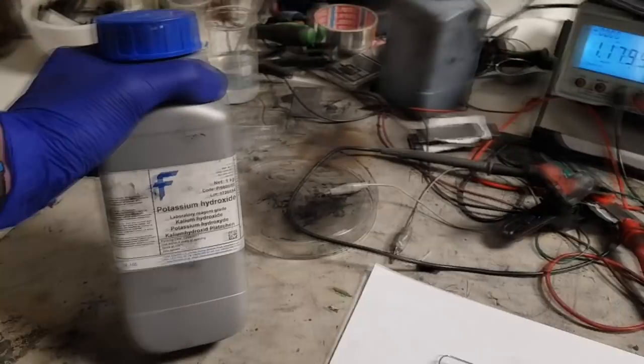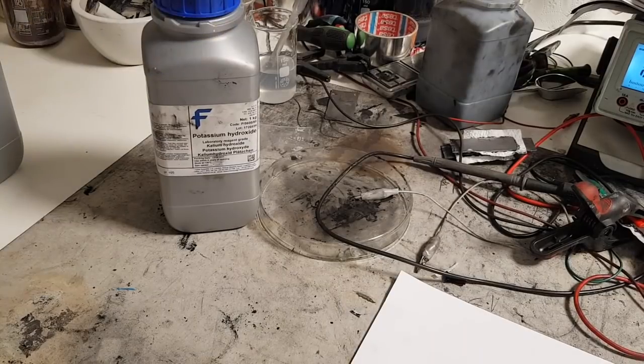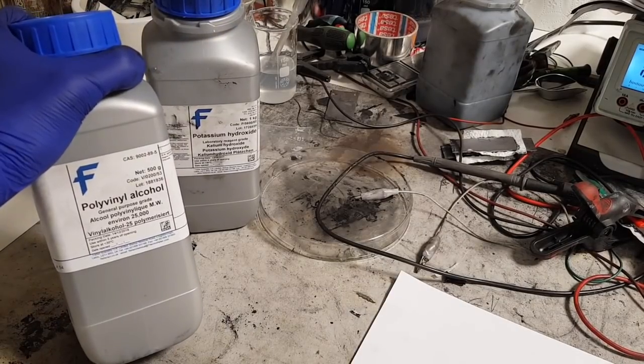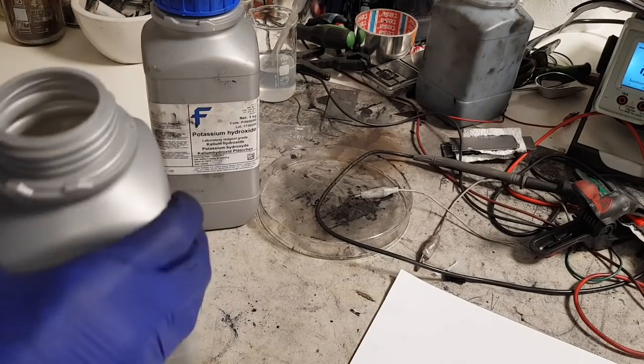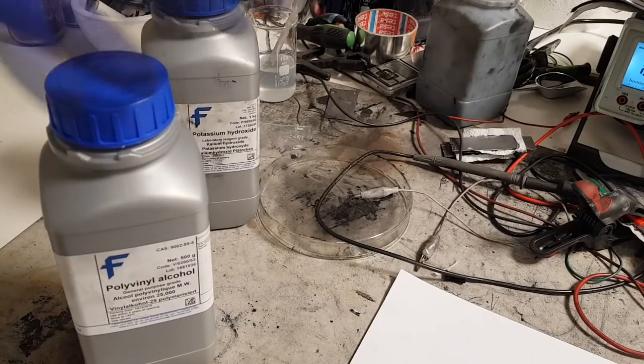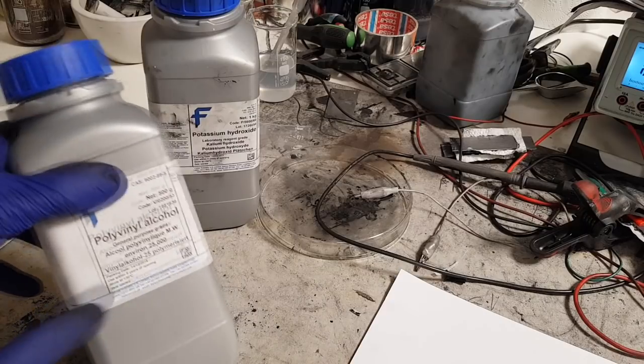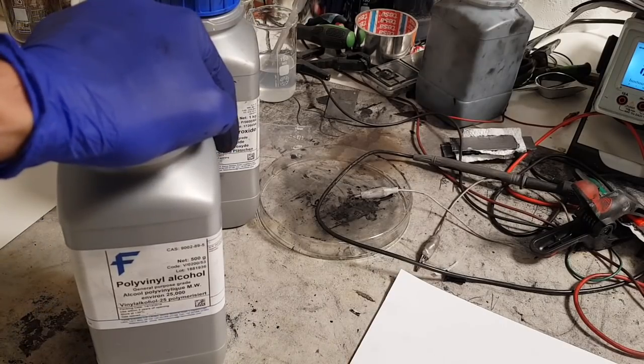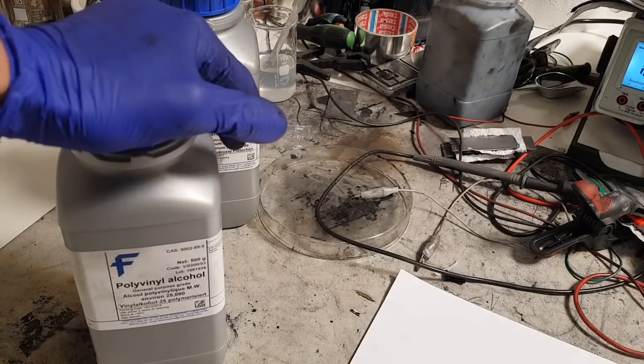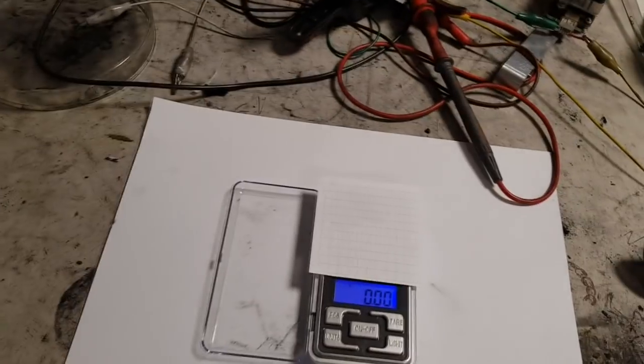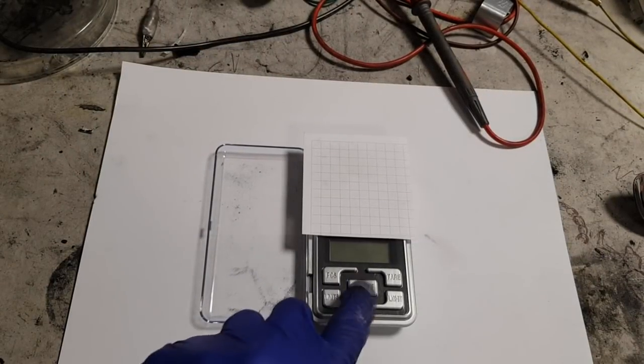Then we need some potassium hydroxide and some PVA. So this is pure PVA, but you can also use some wood glue if you like, but better results you will get with pure PVA. This PVA you can also find on eBay. Just search for PVA and you will find some stuff on eBay. So first of all we will